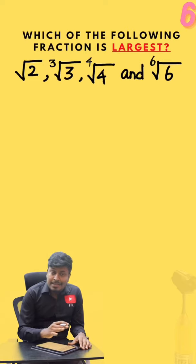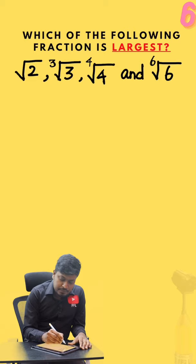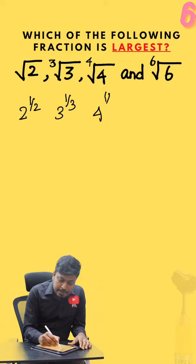We need to find the largest among all these numbers. So first remove the square root. Square root of 2 can be written as 2 power 1 by 2. This will be 3 power 1 by 3, 4 power 1 by 4, and 6 power 1 by 6.